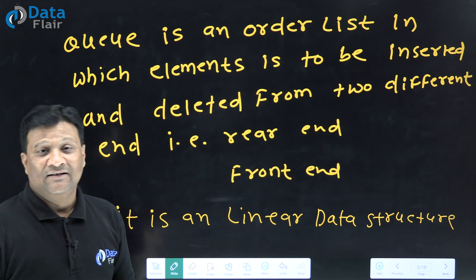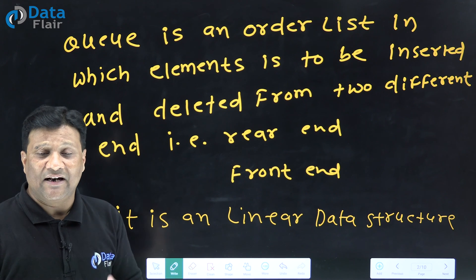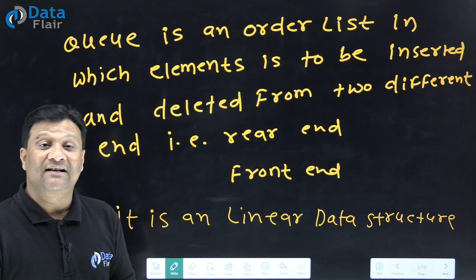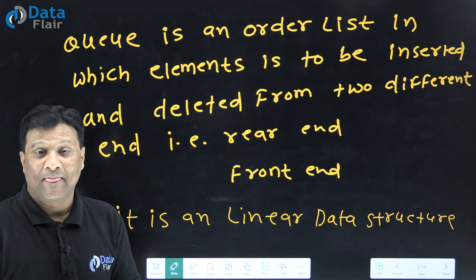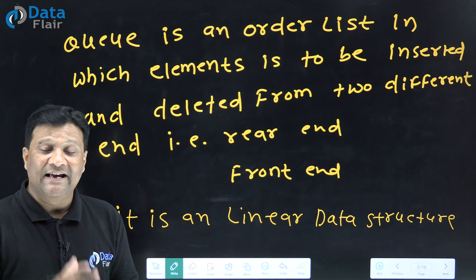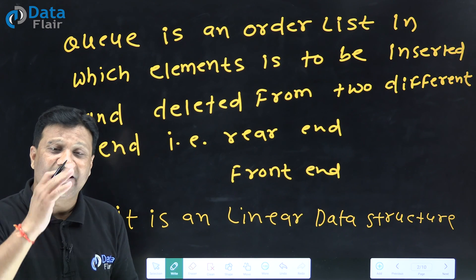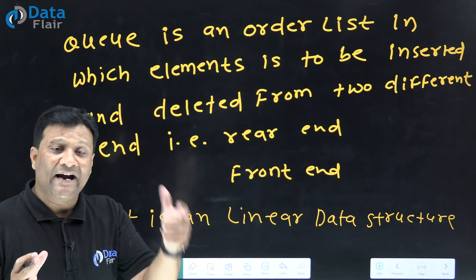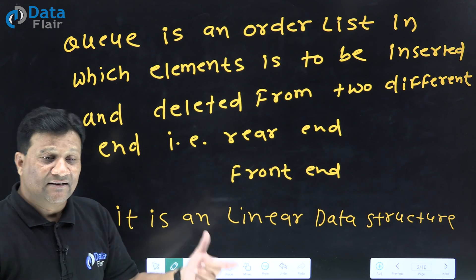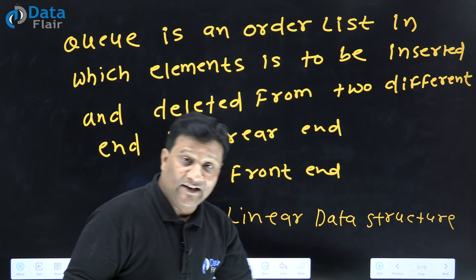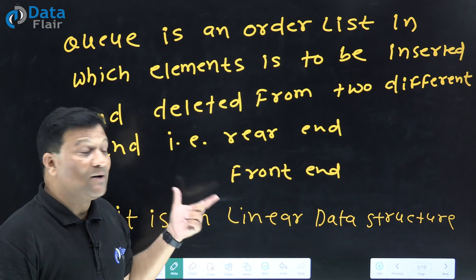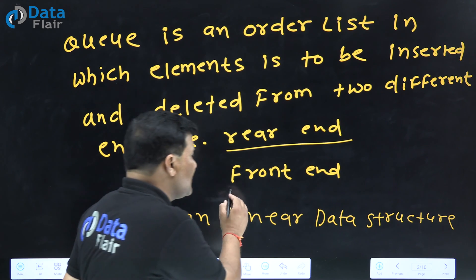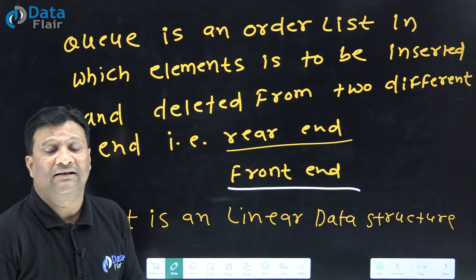Queue is an ordered list in which elements are to be inserted and deleted from two different ends. In Stack we said that element push or pop happens from one end, but in Queue we say there are two different ends - one end where element will be inserted and second end where element will be deleted. The end from which we insert element is called rear end, and the end from which we delete element is called front end.